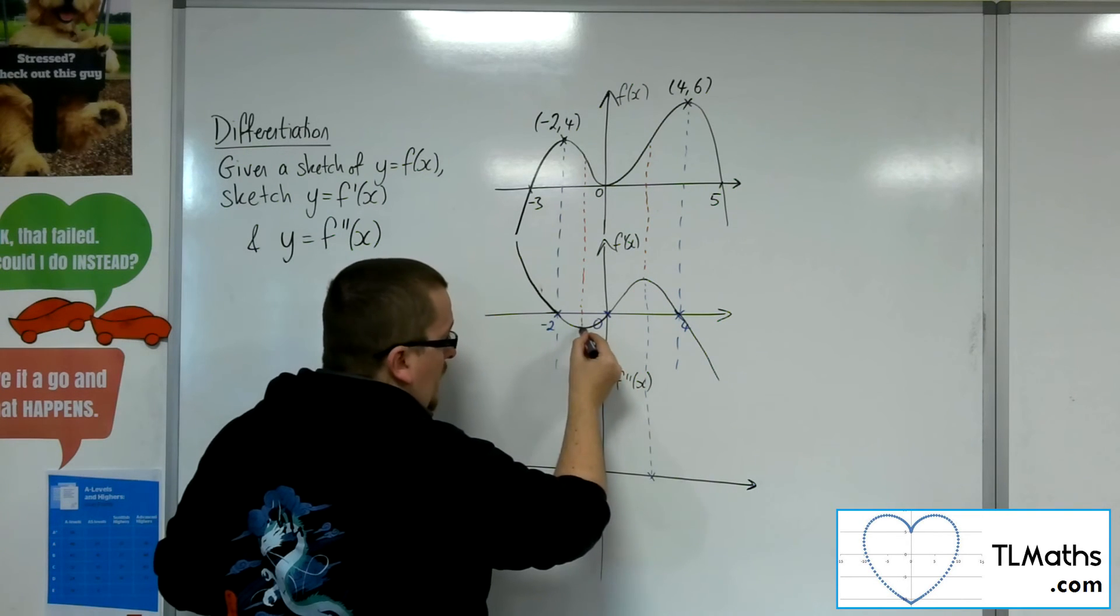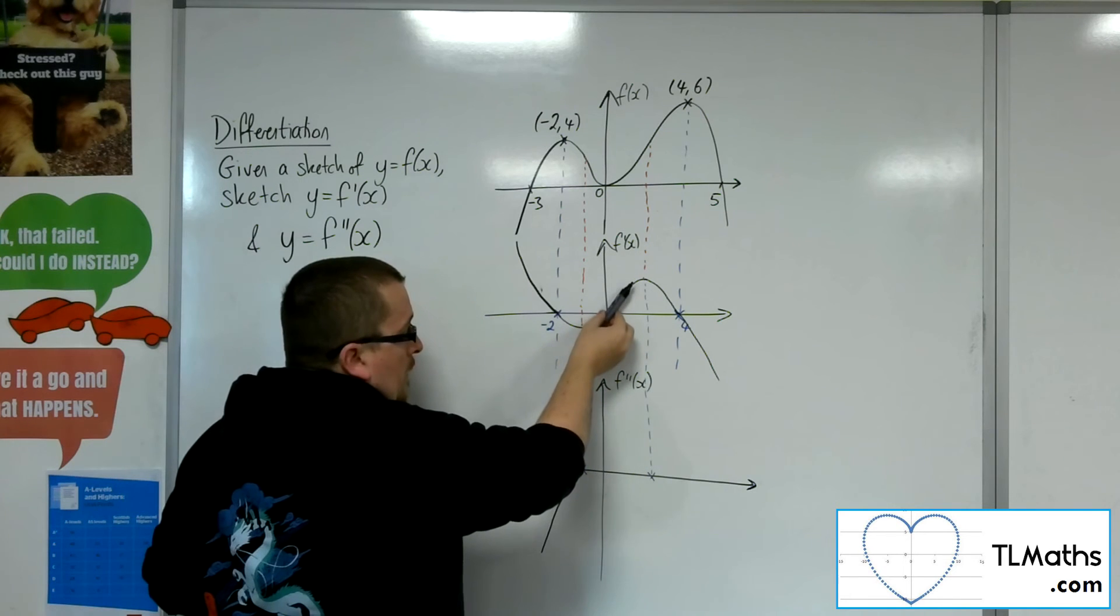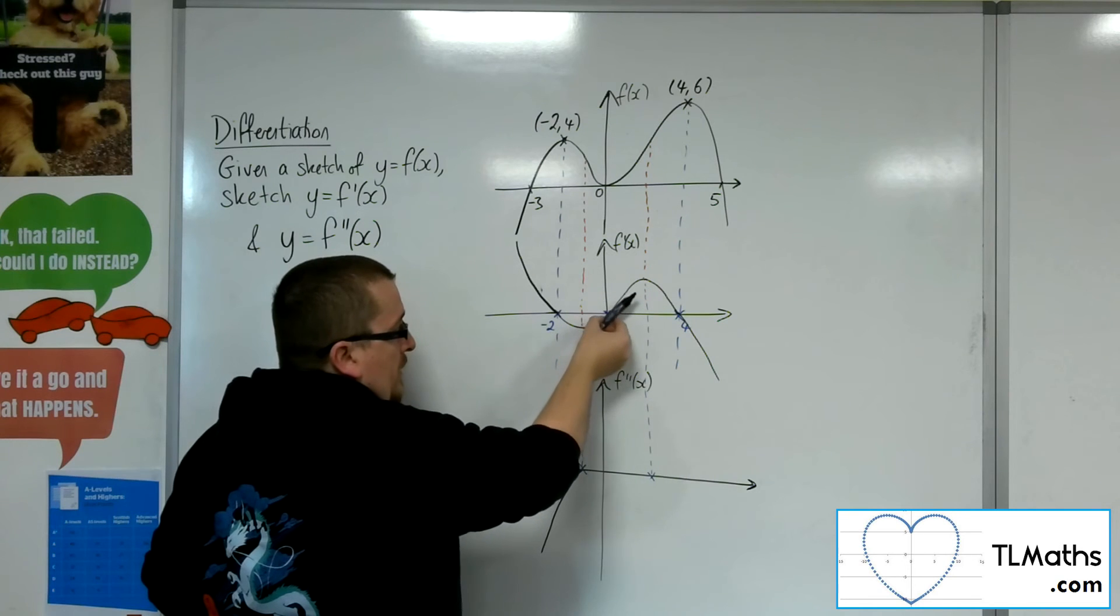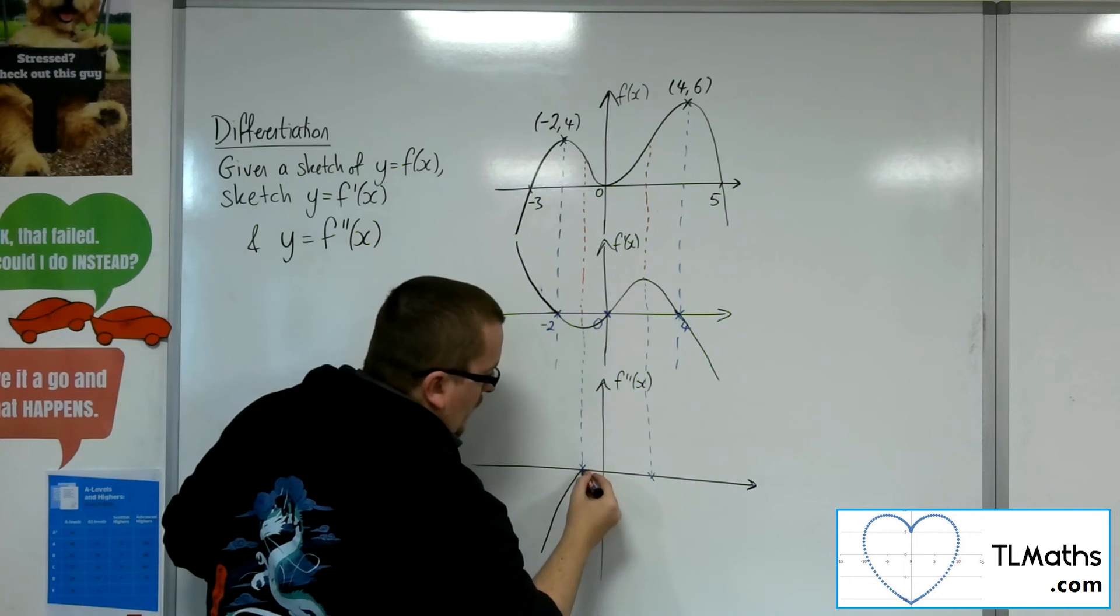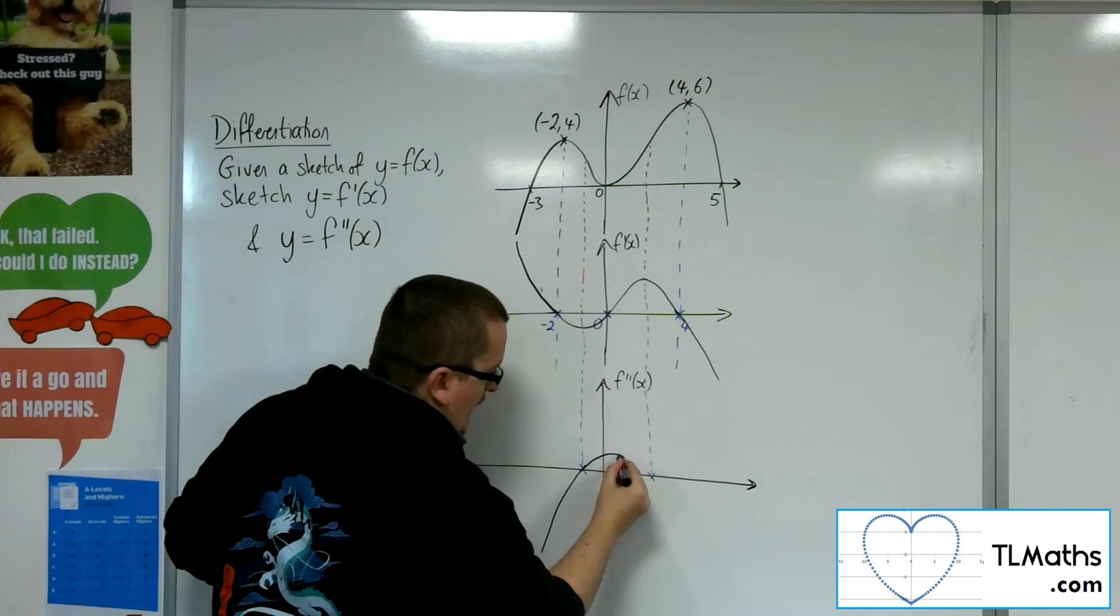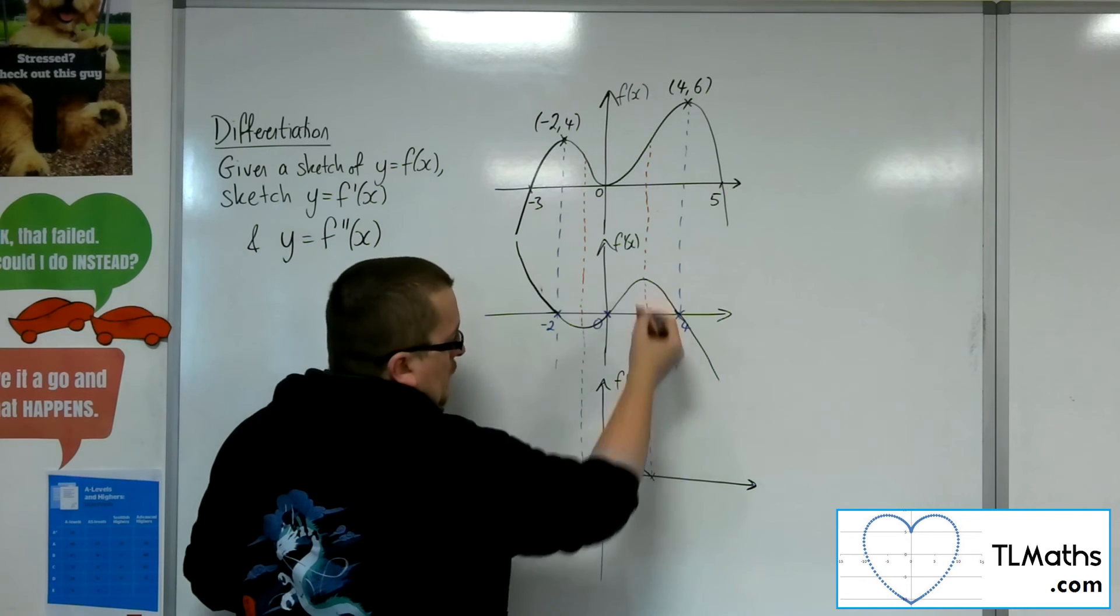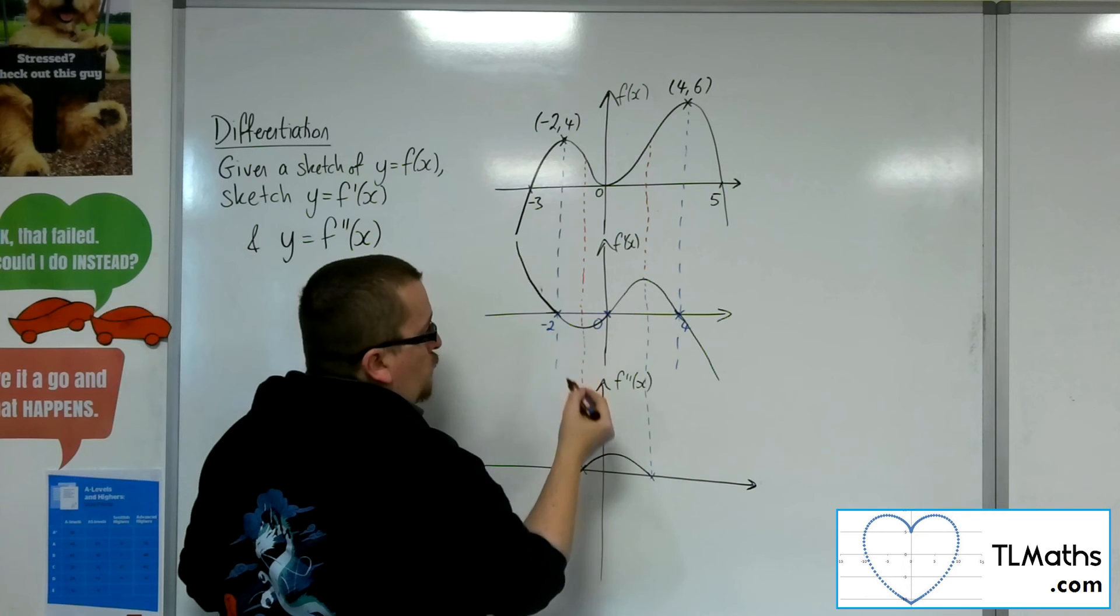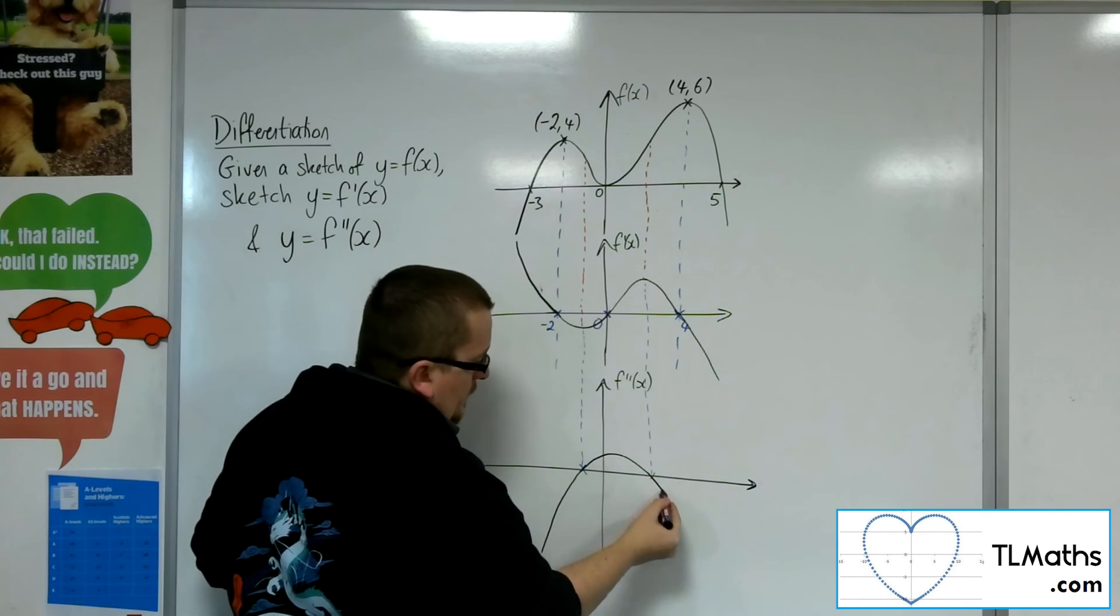And then we go to a positive gradient until we hit zero again. So as you can see, we're going to get to this point where there's this maximum gradient, and then it starts to shallow off again. It's increasing, then it hits a maximum point, and then it's decreasing again. So it's increasing and then decreasing, and that's where it's going to hit zero, because we've got a stationary point there, and then it goes into negative gradient, like so.